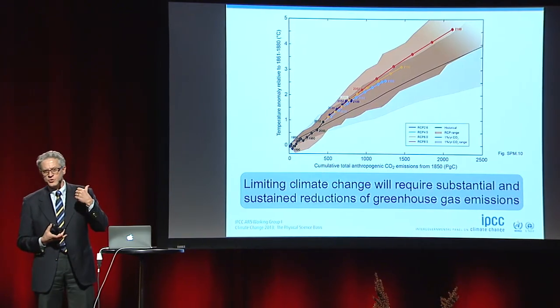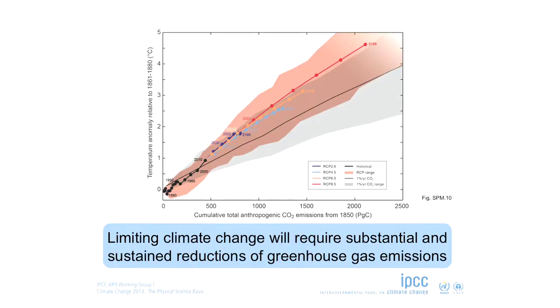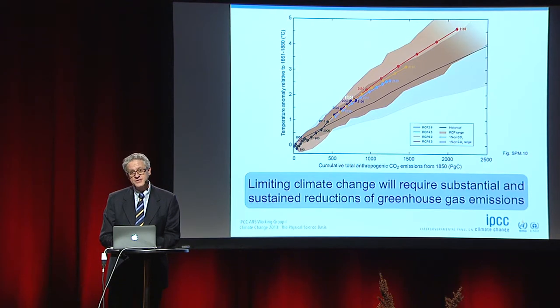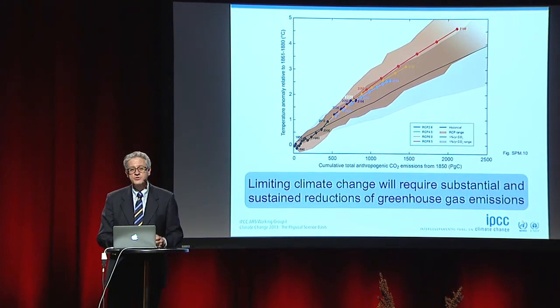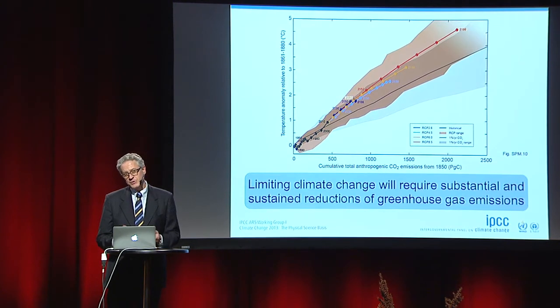This convinced the policymakers to endorse this sentence: limiting climate change will require substantial and sustained reductions of greenhouse gas emissions. The take-home message is that we do have a choice — it's our choice where we stop on this trajectory. But where we stop is not decided in 2100. You would have to decide that now. Thank you very much for your attention.